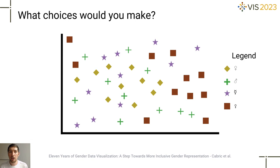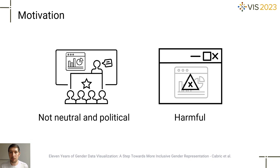Why is it important to study visual gender representation? Gender is a common dimension in datasets, and designers visualizing data about people need to ask themselves the same question I asked you at the beginning of this video. As many in the visualization community have discussed, visualizations are not neutral — they are political, and they can also be harmful. This work aims to provide an overview of current practices to help designers visualize gender data, as well as generate discussion and further research on how to represent gender.